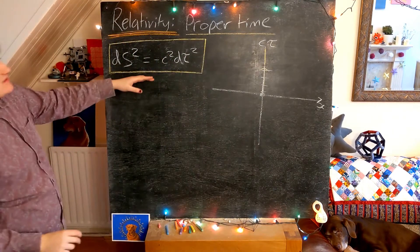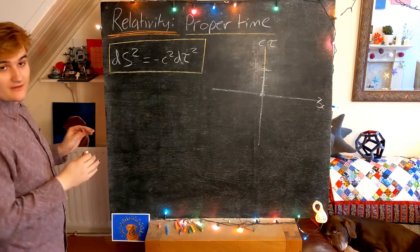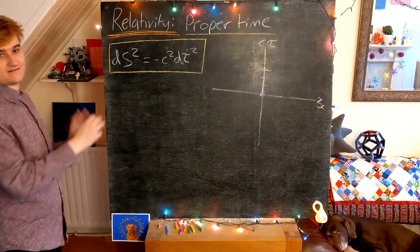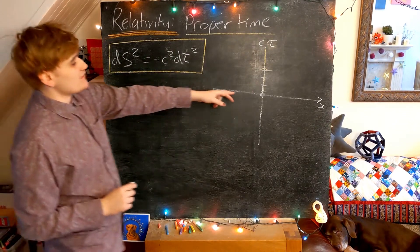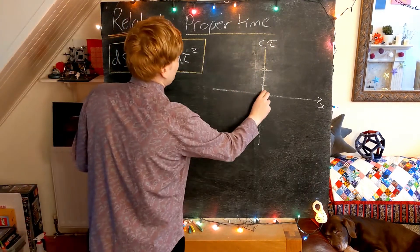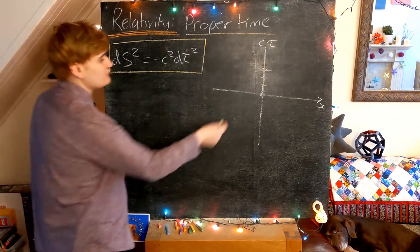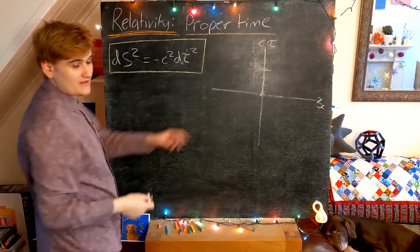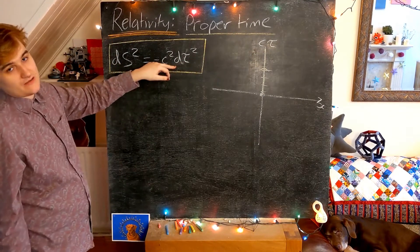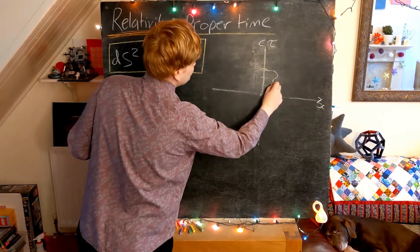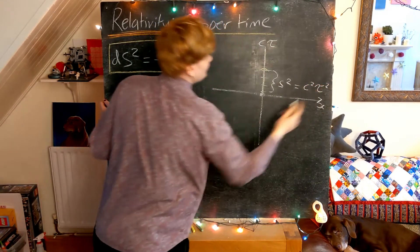This is going to be an incredibly useful expression, not only in special relativity but also in general relativity. What this is simply measuring is just the length of your world line — essentially just measuring how much time has elapsed in your own reference frame, because in your own reference frame you're only moving through time. The length of your world line directly corresponds to how much time has elapsed, so this distance ds² is essentially the same as the time interval c²dτ².